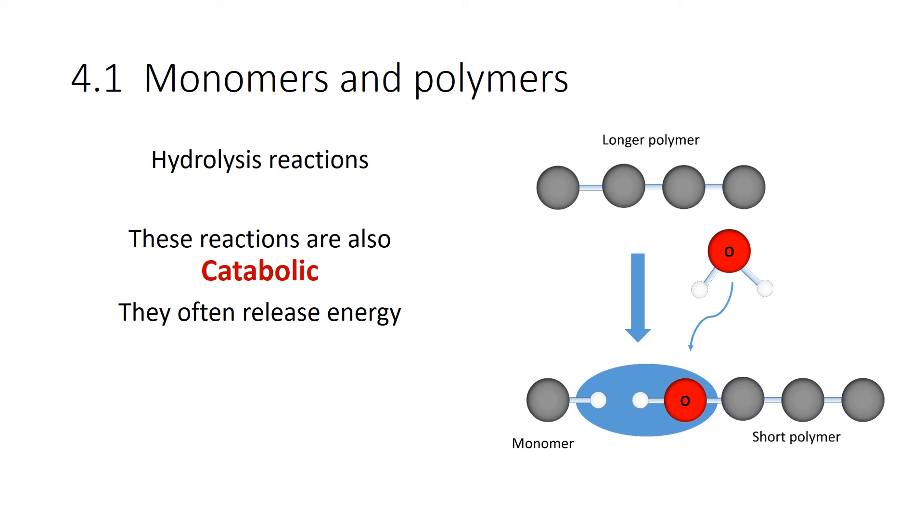So as you can see, metabolism uses both condensation and hydrolysis reactions. Because metabolism is the sum of all the chemical reactions in your body. Building things up, which is an anabolic reaction. And catabolic, which is breaking things down. If you need energy for an anabolic reaction, a condensation reaction, you often get that energy from a catabolic reaction.